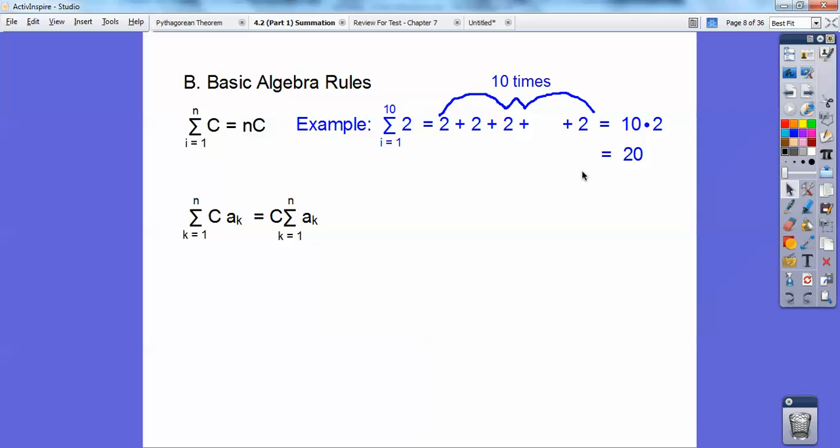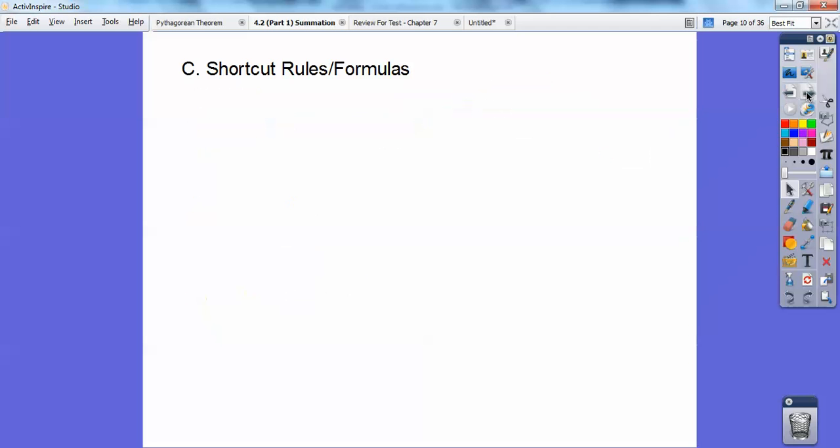The summation of when you have a constant right here, it just means you can put the constant out in front and we'll do some examples and then just do whatever formula you have in there afterwards. And then you can just add or subtract them together, take the summation of them both separately. Pretty basic rules right there.